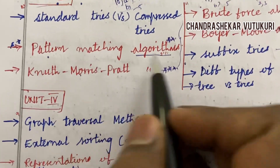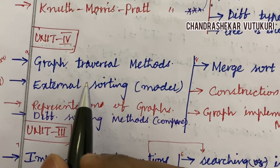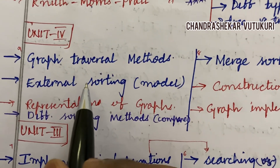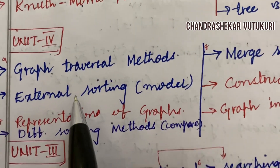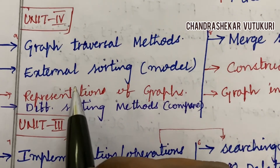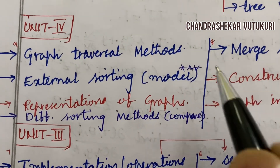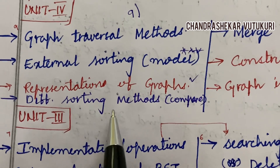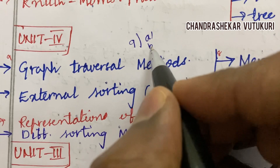Later you have certain programs also which you are supposed to work out. I have also taken into consideration Unit 4. Unit 4 doesn't have any programs — it is one of the easiest units. I am going to give you certain plans on how to work out and which unit to prepare at the end of this video. The graph traversal methods as well as external sorting along with the merge sort model are said to be the topmost questions. The question number is 9 here. The representation of graphs as well as different sorting methods and comparing them may be 9A as well as 9B.